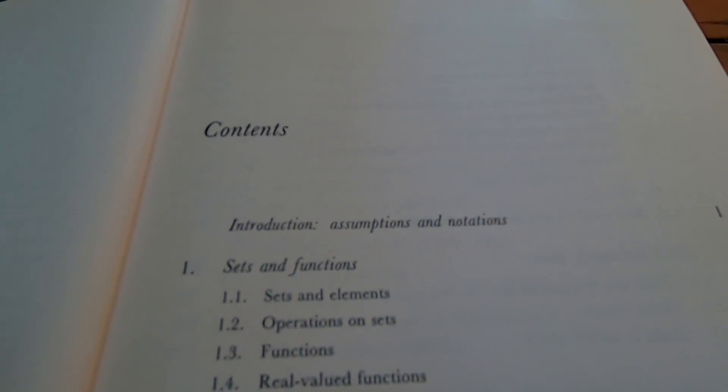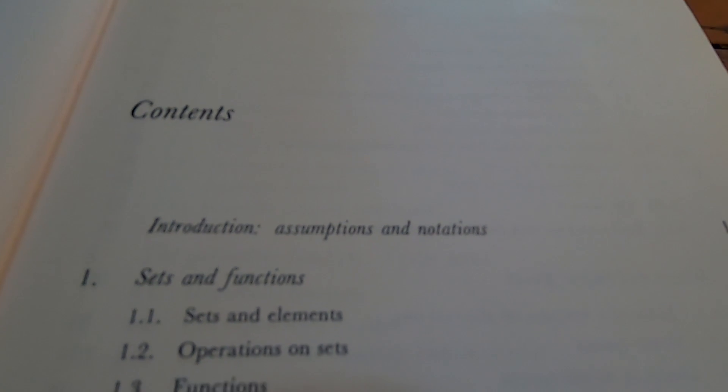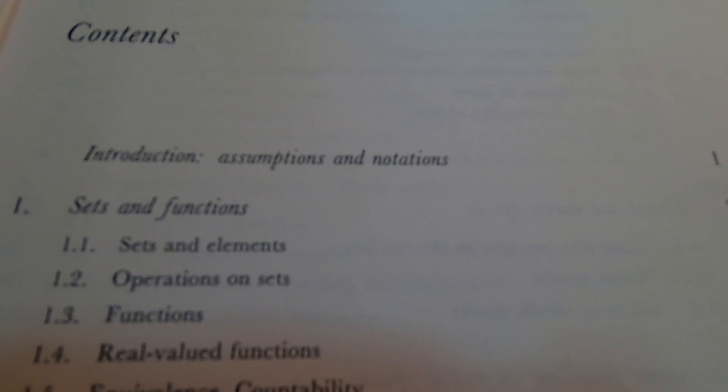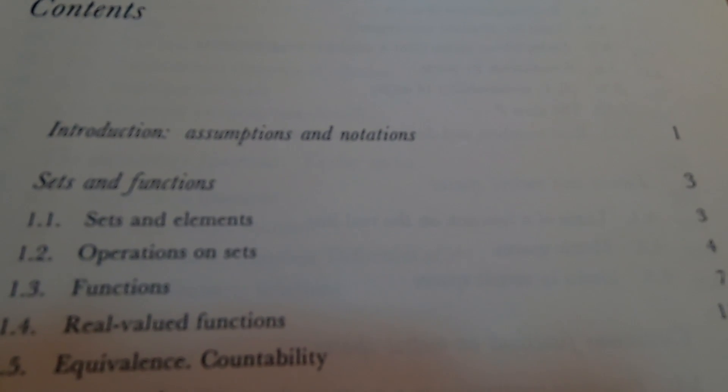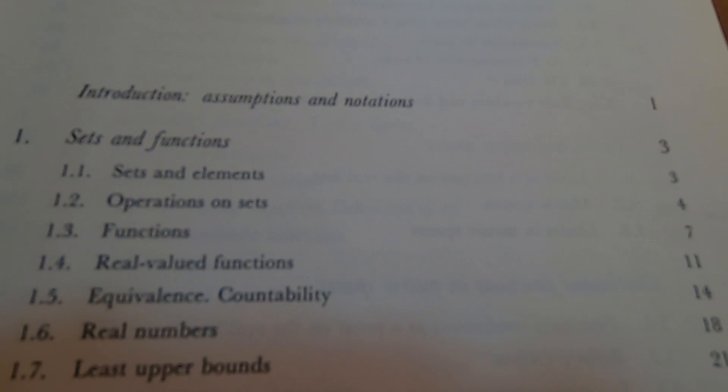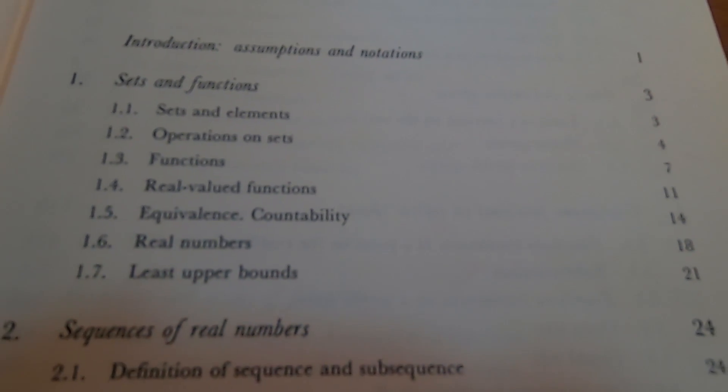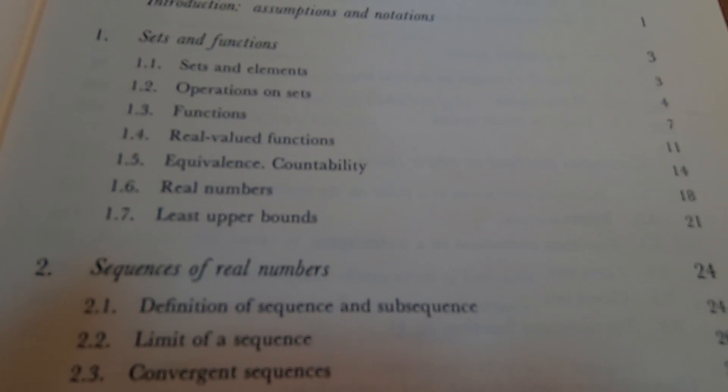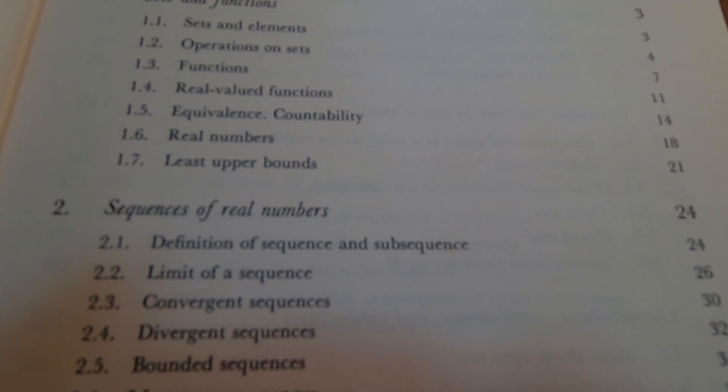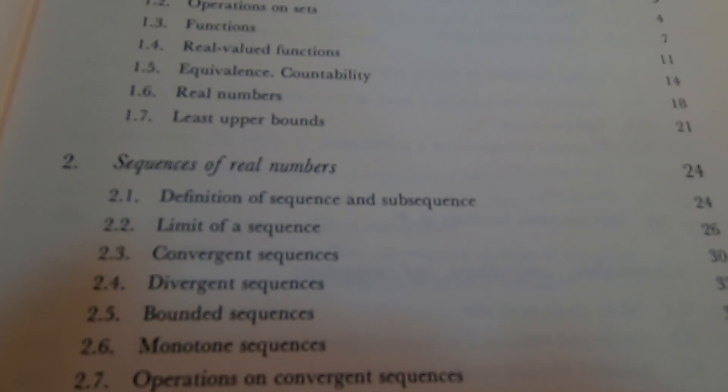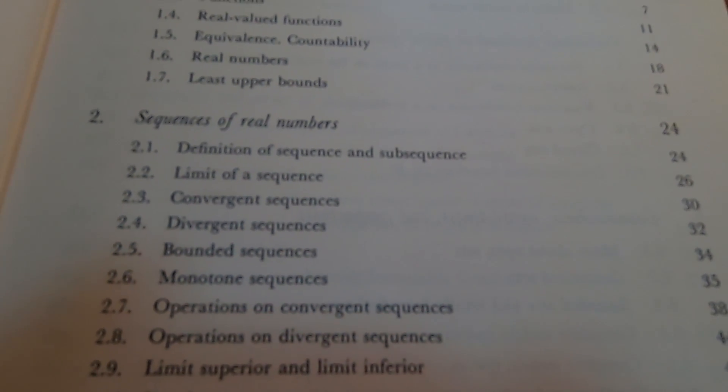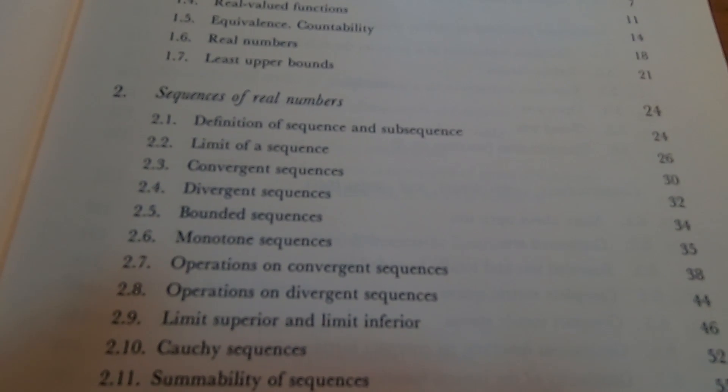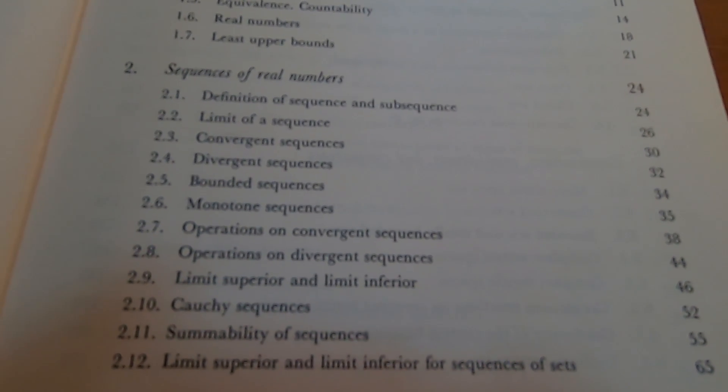I really like how the book lays flat. Let's take a look at the table of contents. So you start off with sets and functions. They go over all of the important stuff. Then sequences of real numbers, which is a really common order. A lot of the analysis, aka advanced calculus books that I have, follow this order. For example, the Fitzpatrick book follows a similar pattern.